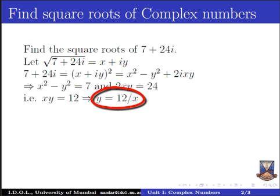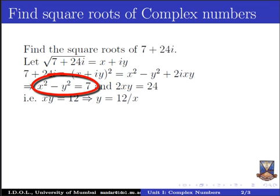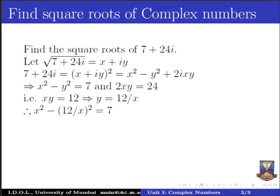We substitute y equal to 12 by x into the equation x square minus y square equal to 7. Replacing y with 12 by x, we get x square minus 12 by x whole square equal to 7, which simplifies to x square minus 144 upon x square equal to 7.